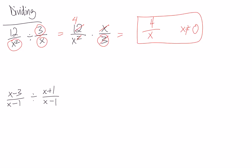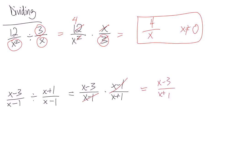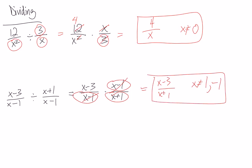For the second example, let's rewrite it so that it's times (X minus 3) over (X minus 1), times (X minus 1) over (X plus 1) — that's the reciprocal. Now we're ready to cancel. The (X minus 1)'s cancel, and that's it. So we have (X minus 3) on top and (X plus 1) on the bottom. Our non-permissibles are positive 1 for the first denominator, negative 1 for the second denominator, and also positive 1 for the top of the second fraction — but we've already got that one, so we don't have to worry about it.